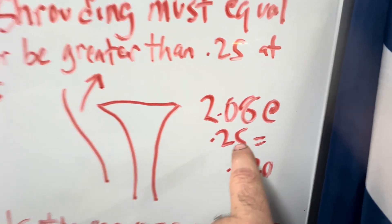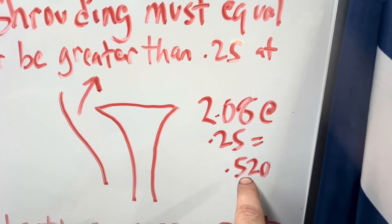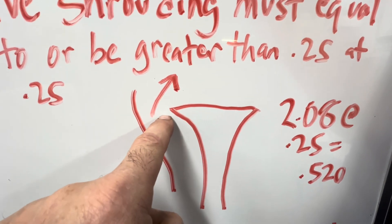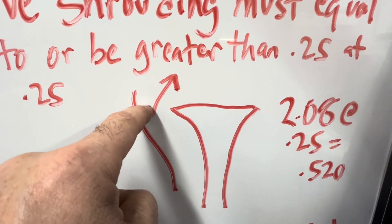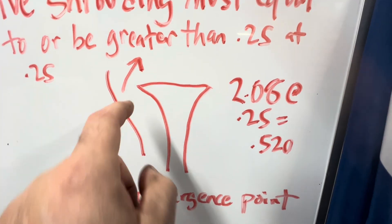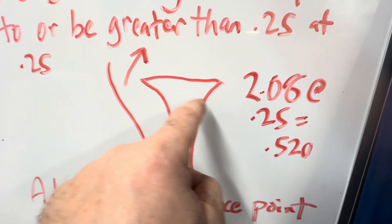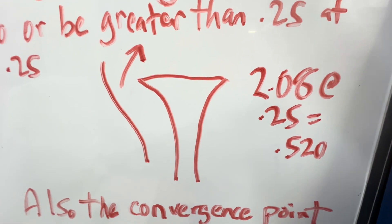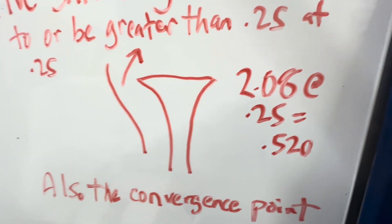Because the rule of thumb and the thing we need to worry about is what they call 0.25 LD, which is when the valve shrouding is equal to or greater than 0.25 at 0.25. Okay? It's also known as a convergence point.